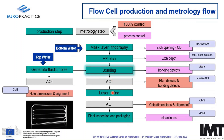After singulation of the component, we measure dimensions to confirm correct cutting — dimensions, alignment, chipping and other specifications. Finally, inspection and packaging, ensuring the component is clean according to customer needs. Classical visual inspection.